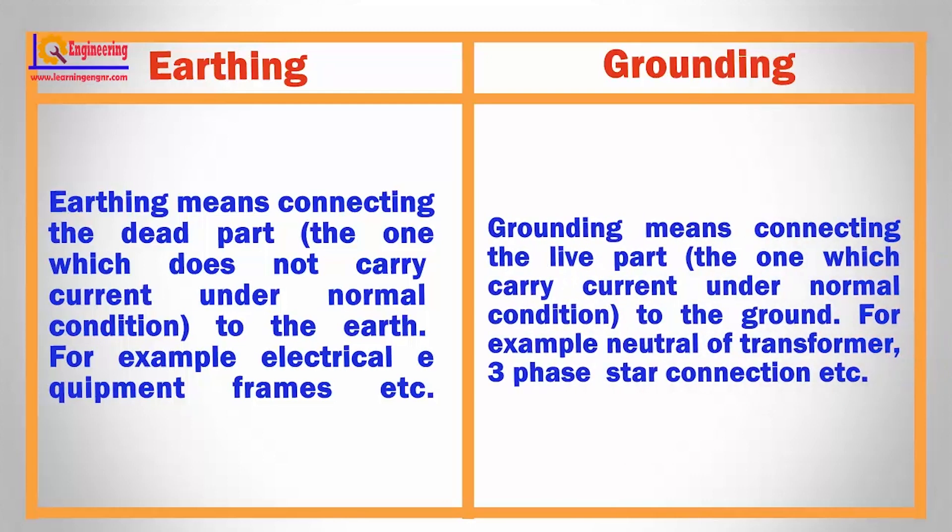Grounding means connecting the live part, the one which carries current under normal condition, to the ground. For example, neutral of transformer, 3-phase star connection, etc.